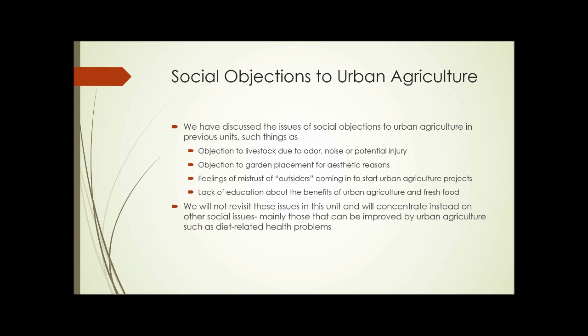As we said, there are social objections to urban agriculture — objections to livestock because of odor, noise, or fear of potential injury; objections to garden placement for aesthetic reasons; feelings of mistrust of outsiders coming in to start urban agriculture projects; and lack of education about the benefits of urban agriculture and fresh food. We're not going to revisit these issues in this unit because we've talked about them in previous units. Instead, we're going to concentrate on social issues that can be improved by urban agriculture, such as diet-related health problems.